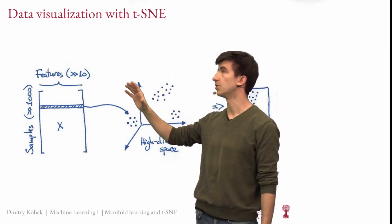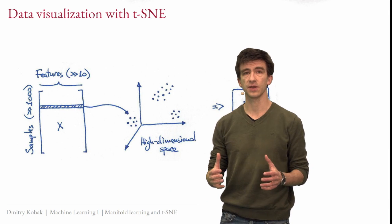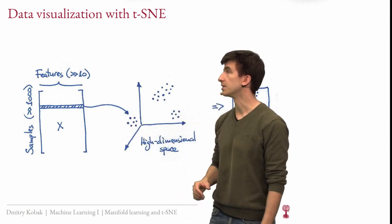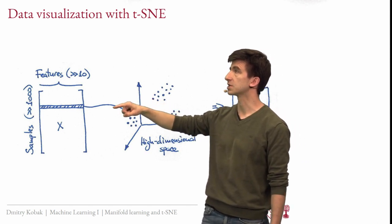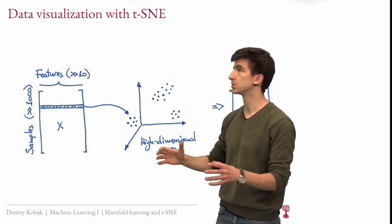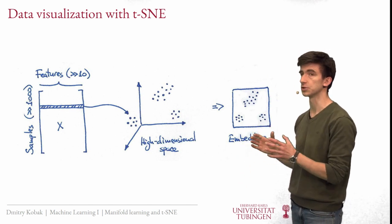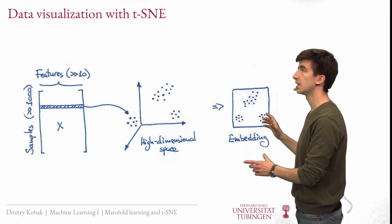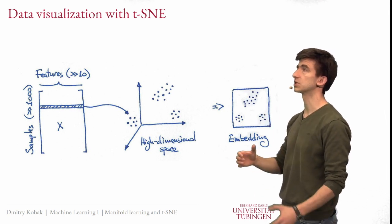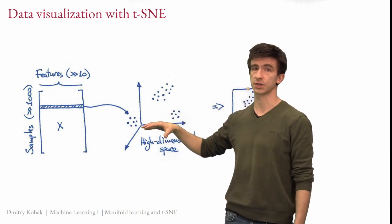Just as a reminder, in this unsupervised learning setting we have some data matrix X where samples are rows and features are columns. We are not trying to predict anything, so there is no Y matrix that we would predict. Instead we are trying to find some interesting structure in this data. Each sample, each row of this matrix, is a point in the high dimensional space. For the dimensionality reduction problem, we want to reduce the number of dimensions from this potentially high dimensional space to a low dimensional space. Today we are going to be talking about two-dimensional data visualizations — we will always reduce the dimensionality just down to two, which can be plotted as a scatter plot. This is also called embedding.